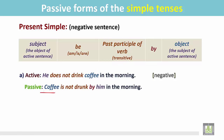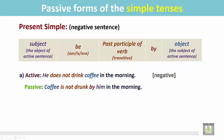'Coffee' — this is the object; now it becomes the subject. 'Coffee' is a singular noun, so we use the be verb 'is,' and then add 'not' to make it negative. After that, the transitive verb becomes the past participle form: 'drunk.' Then add 'by,' and the subject of the active sentence becomes the object: 'him.' Result: 'Coffee is not drunk by him in the morning.'